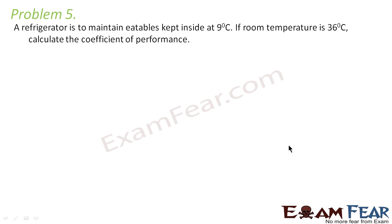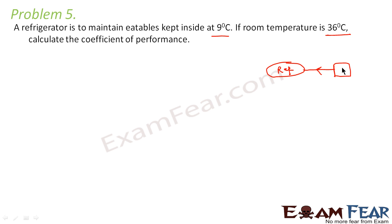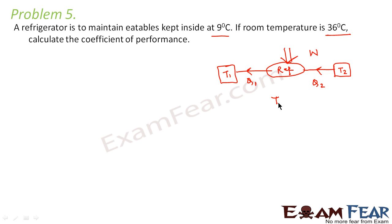Now let us look at the last problem. A refrigerator is to maintain items inside at 9°C; the room temperature is 36°C. The refrigerator takes heat Q2 from the cold reservoir, does work W, and gives Q1 to the hot reservoir. T2 = 9°C = 282 K (cold reservoir) and T1 = 36°C = 309 K (hot reservoir, i.e., the room).